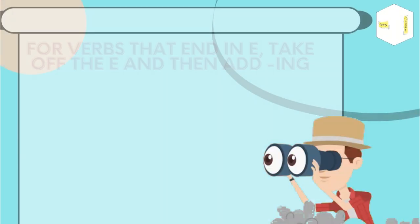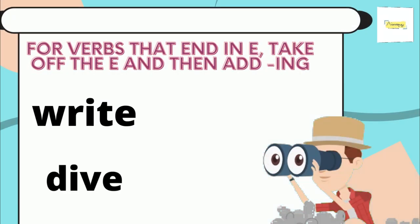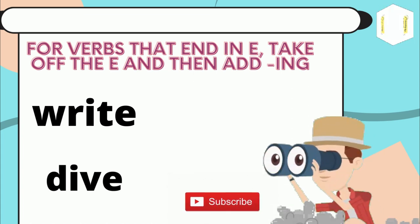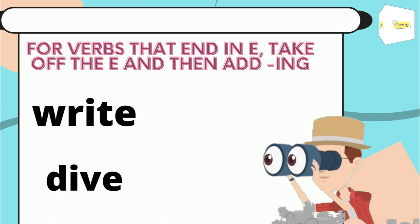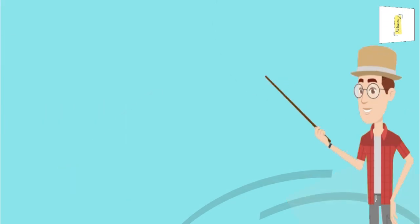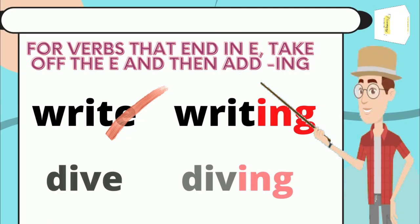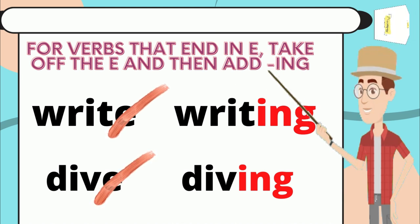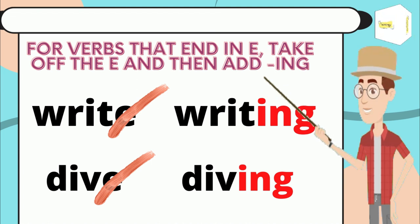For the second rule, for verbs that end in '-e', take off the '-e' and then add '-ing'. Let's see the verbs 'write' and 'dive' — they both end with '-e', so I will cross out the '-e' and then add '-ing': writing and diving.